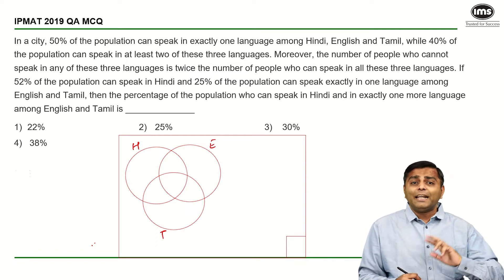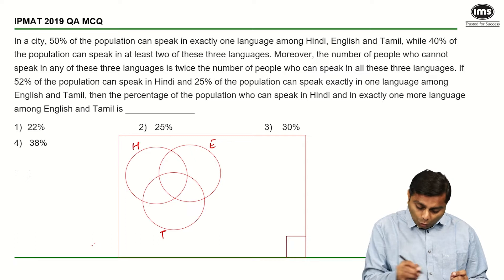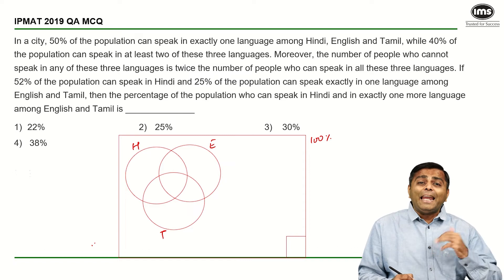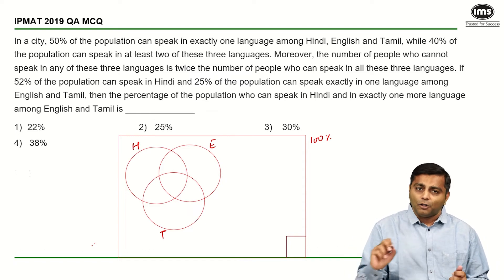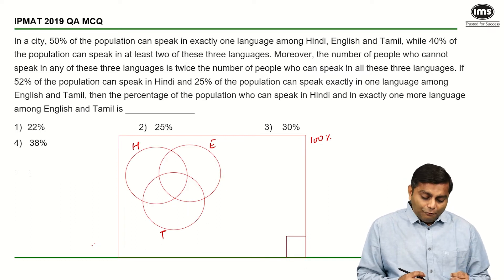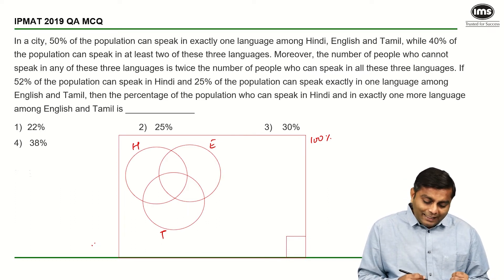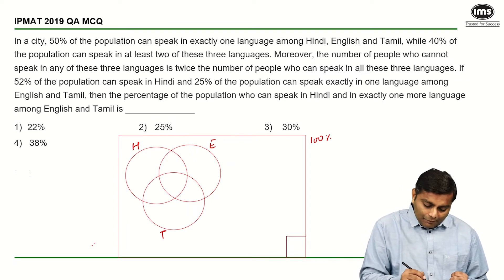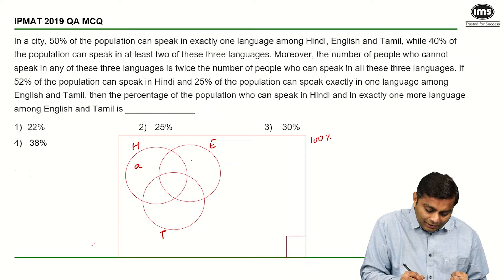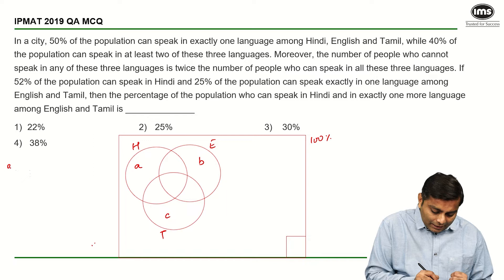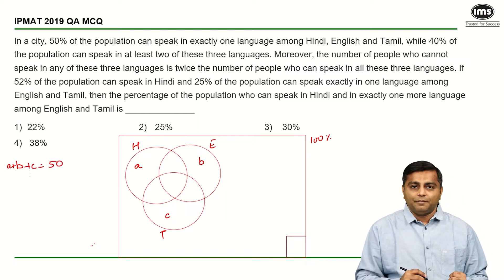The total data is given in terms of percentage, so the total box is going to be 100%. People who are not speaking any of the languages will go in the bottom right corner. Now, first thing: 50% of the population can speak in exactly one language amongst Hindi, English and Tamil. Exactly one language — those are the regions A, B, and C. So A plus B plus C is equal to 50%.